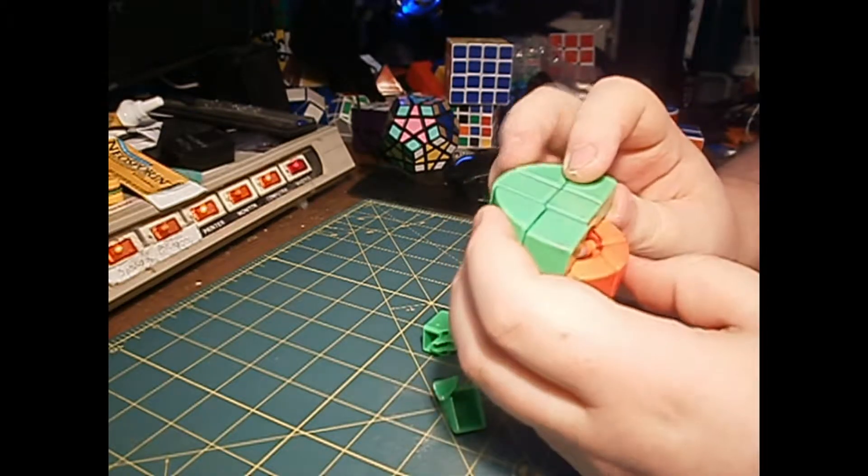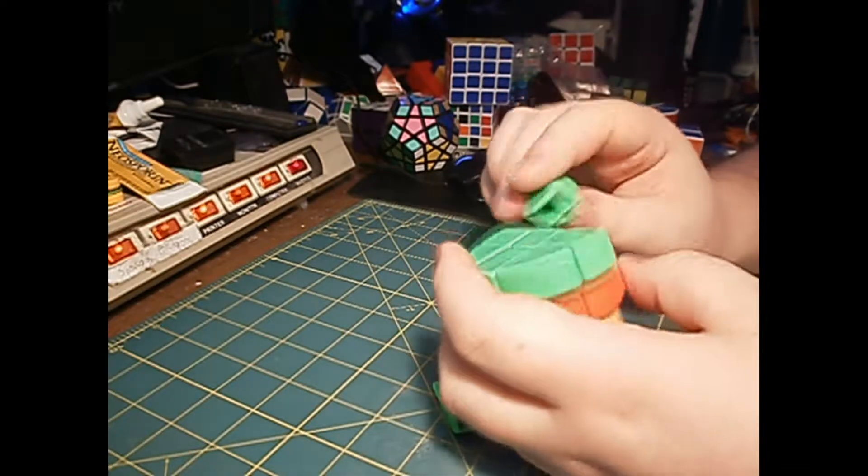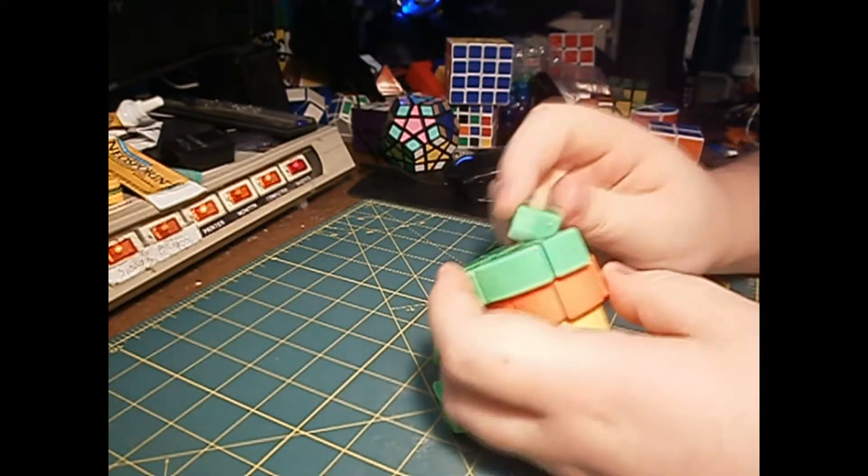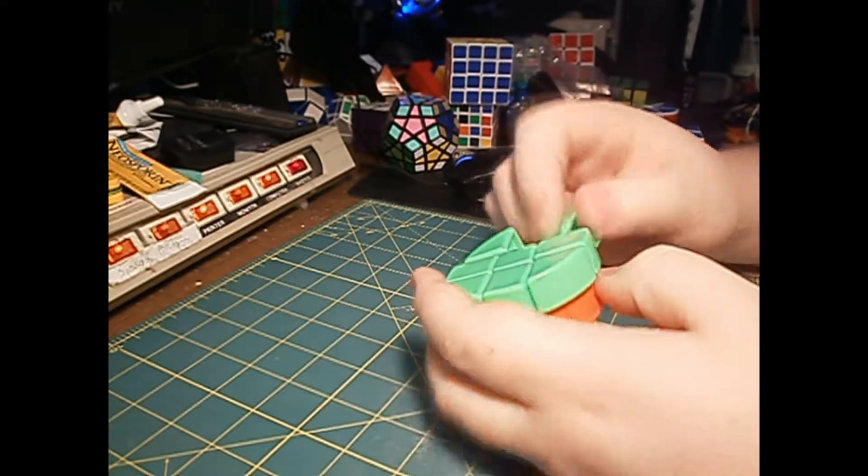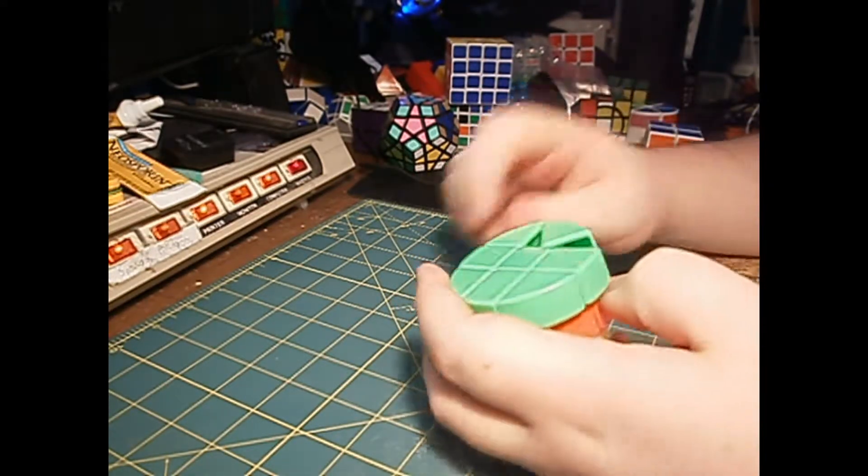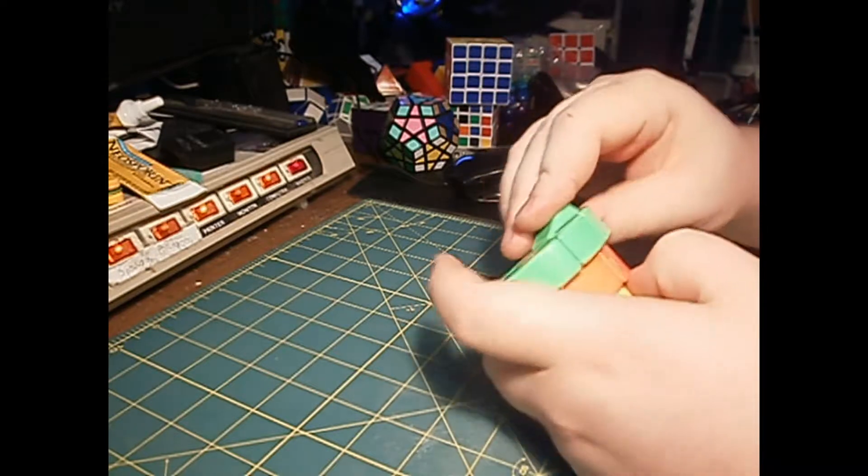And the core looks really cheap. The core looks a lot cheaper than other cores, but it should be replaceable, and everything should be replaceable. But this does seem rather small. I'm going to do a size comparison once I get this back together.